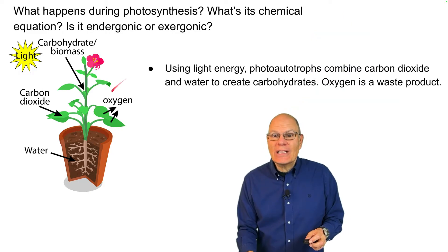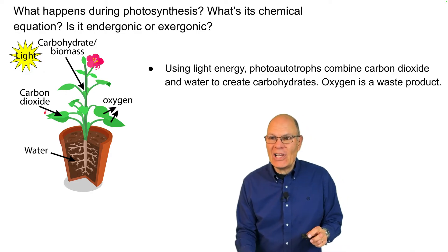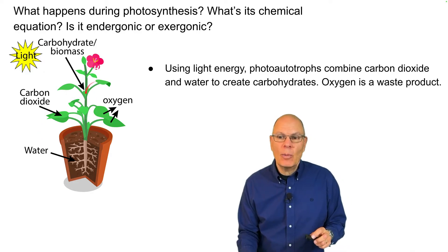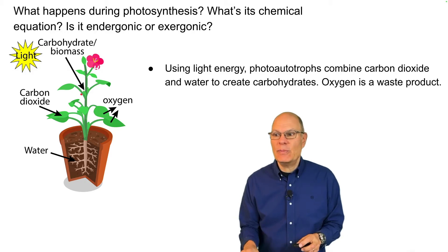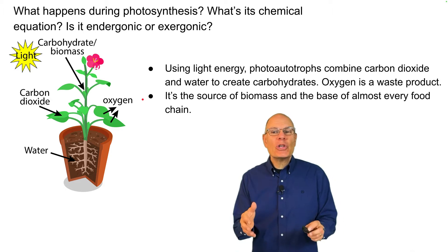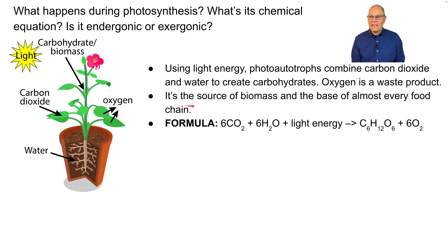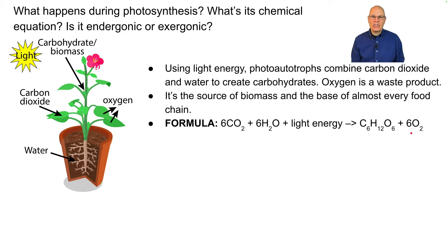In photosynthesis, using light energy from the sun, photoautotrophs like plants combine carbon dioxide and water to create carbohydrates — that's what the plant is made of. Oxygen is released as a waste product. It's the source of biomass and the base of almost every food chain. The formula is: 6CO₂ + 6H₂O, with light energy, are combined into glucose (C₆H₁₂O₆) and 6O₂.